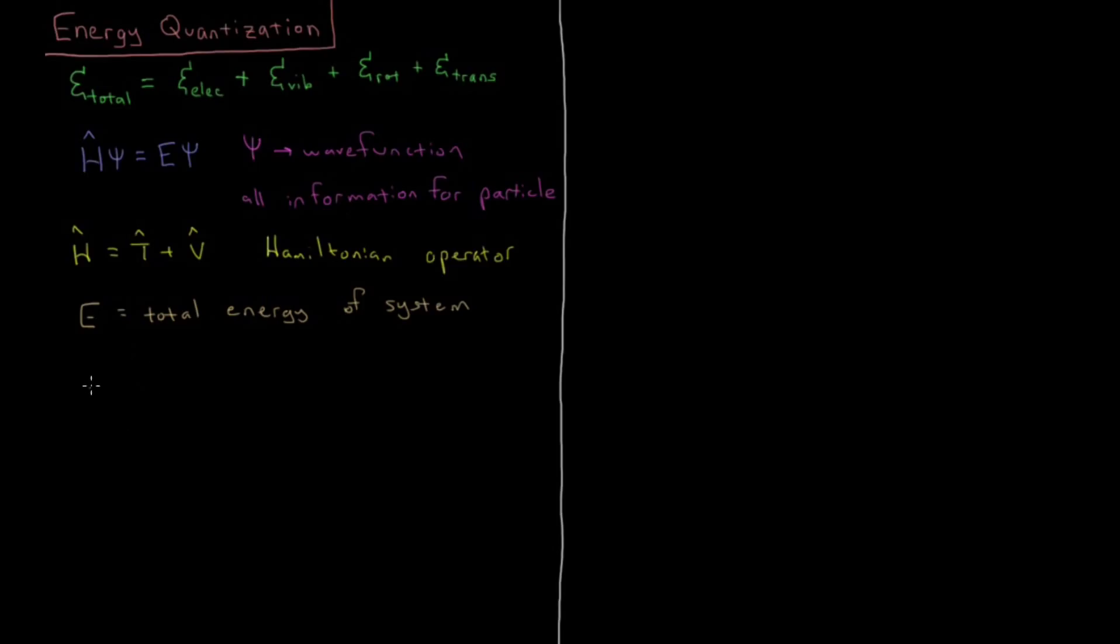So first we have the electronic energy. Like we said, we would just solve 𝜓 for the wave function of the electrons in the molecule. And usually there's a large difference in energy between states and this is usually in the UV-Vis range where these transitions occur.